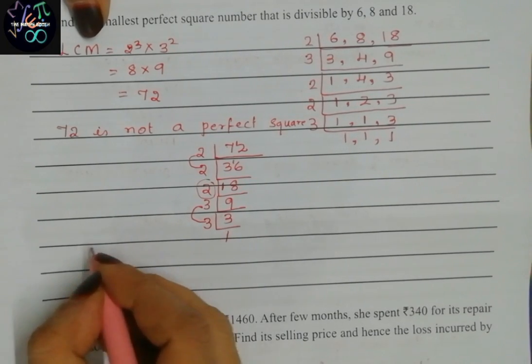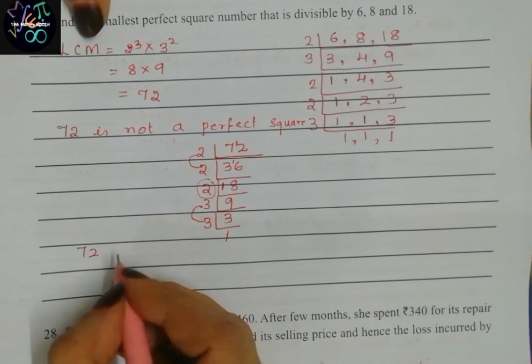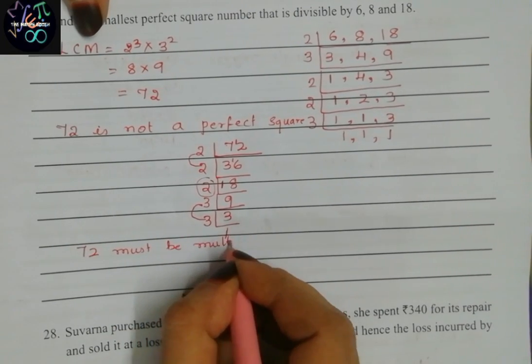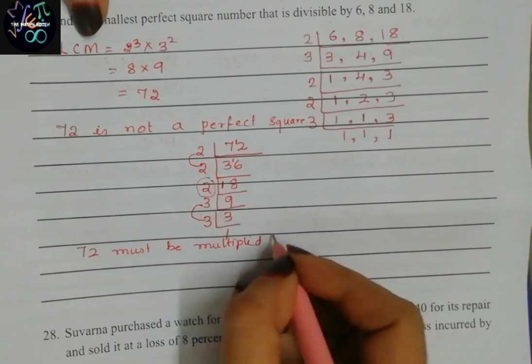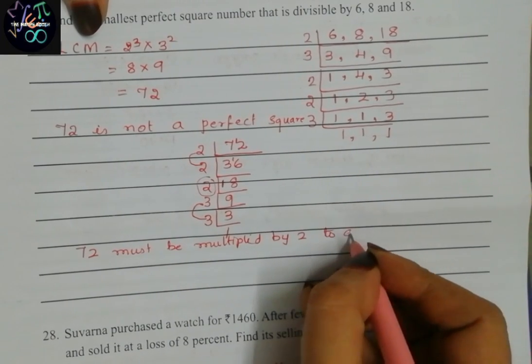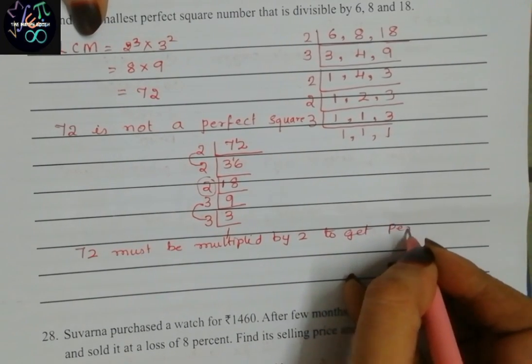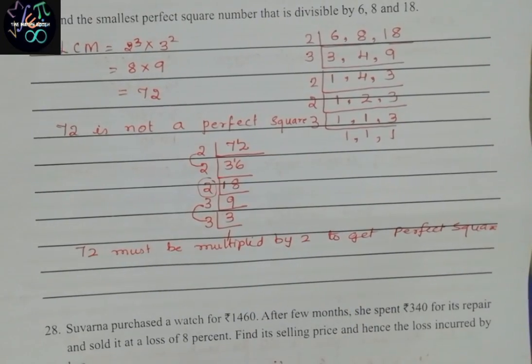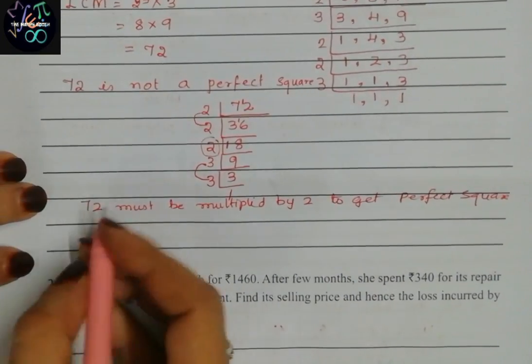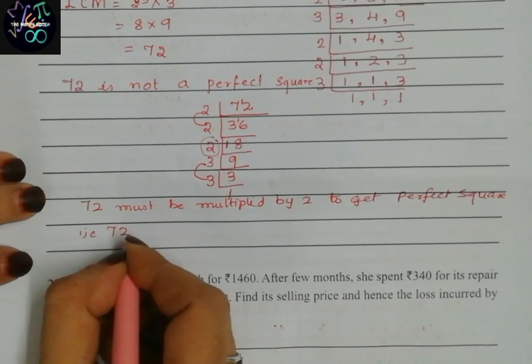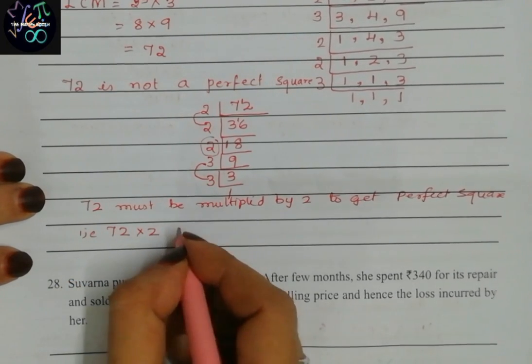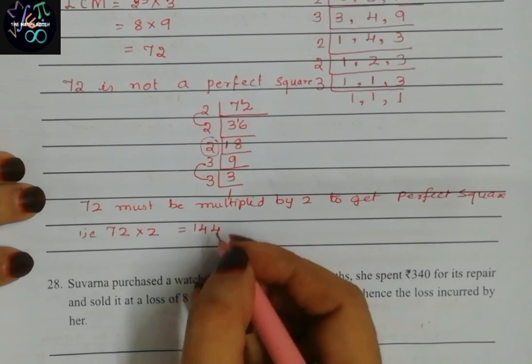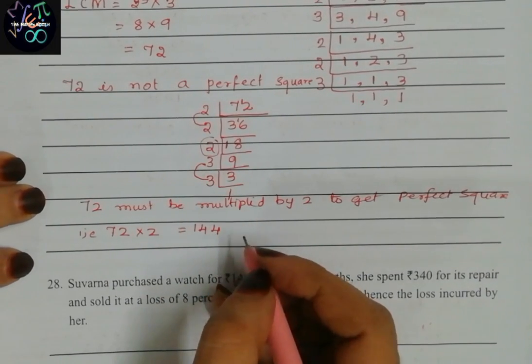What we have to do? 72 must be multiplied by 2 to get perfect square. We have to multiply it by 2. Let us multiply and see. That is 72 into 2, which equals 144. Yes, 144 is the smallest perfect square.